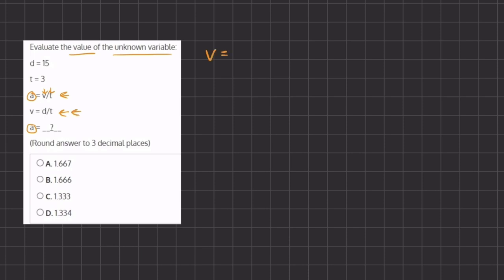We have v equals d which is 15 divided by t which is 3, so v is going to equal 5 because that is 15 divided by 3.